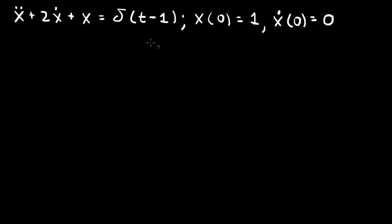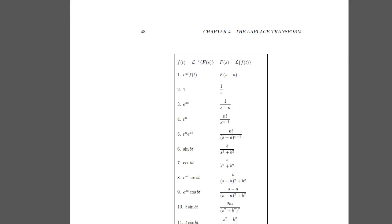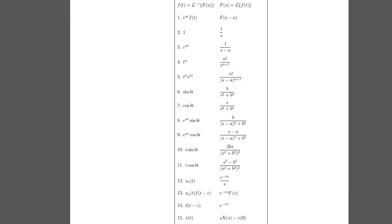Perhaps the easiest way to solve this differential equation is by taking the Laplace transform of both sides. We use the table to do that — specifically the bottom two lines, 15 and 16, to take the transform of the second derivative and the first derivative. And then to take the transform of the Dirac delta function, we use line 14.